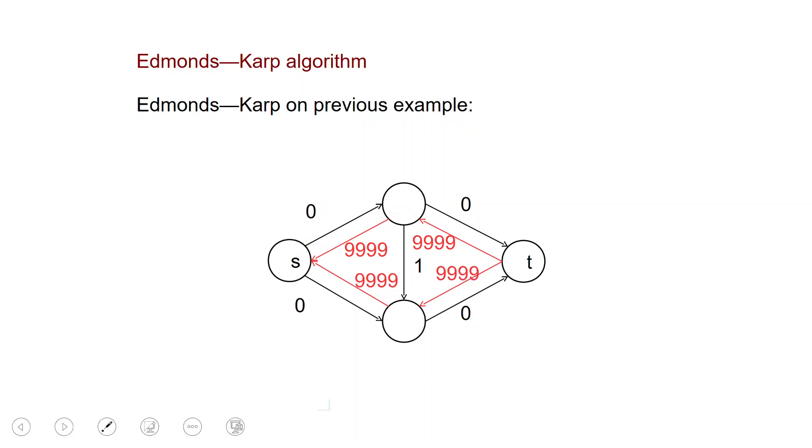And then at the next iteration, we find another shortest path of length 2. We again don't use the middle edge. We completely saturate these two edges and we're done.